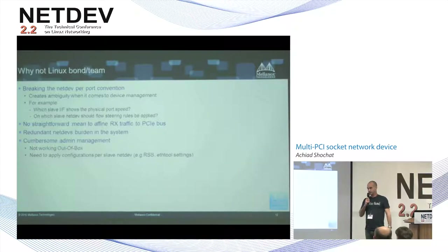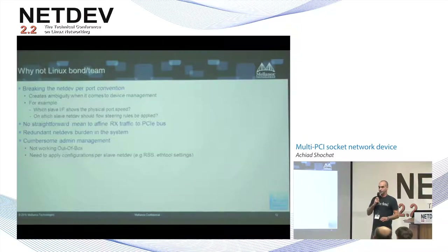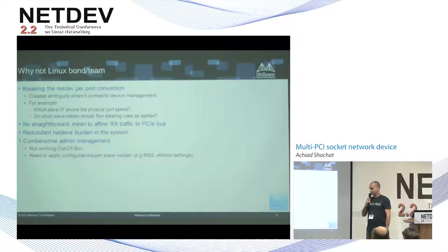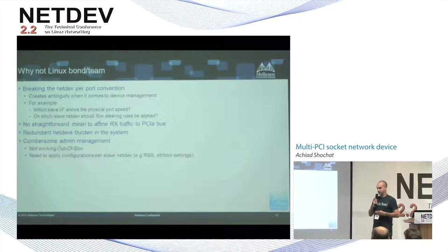One may suggest representing such devices using a Linux bond or team device on top of two net devs — creating for each PCI bus its own network device and then enslaving them into a Linux bond device. I believe this software model is not as good as the previous one, mainly because it breaks the convention of having a single net dev per port.